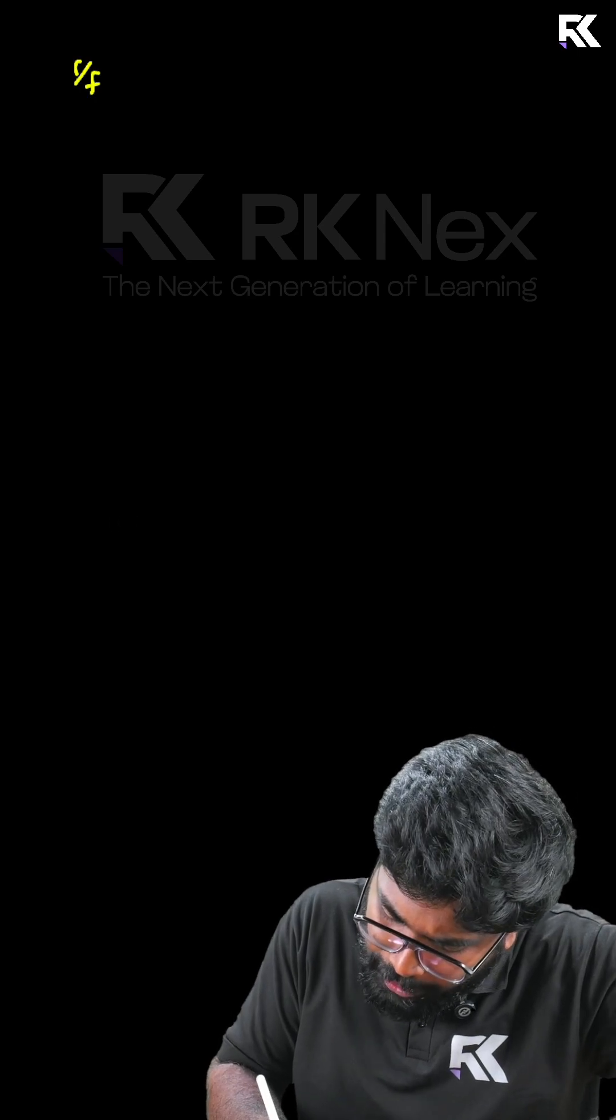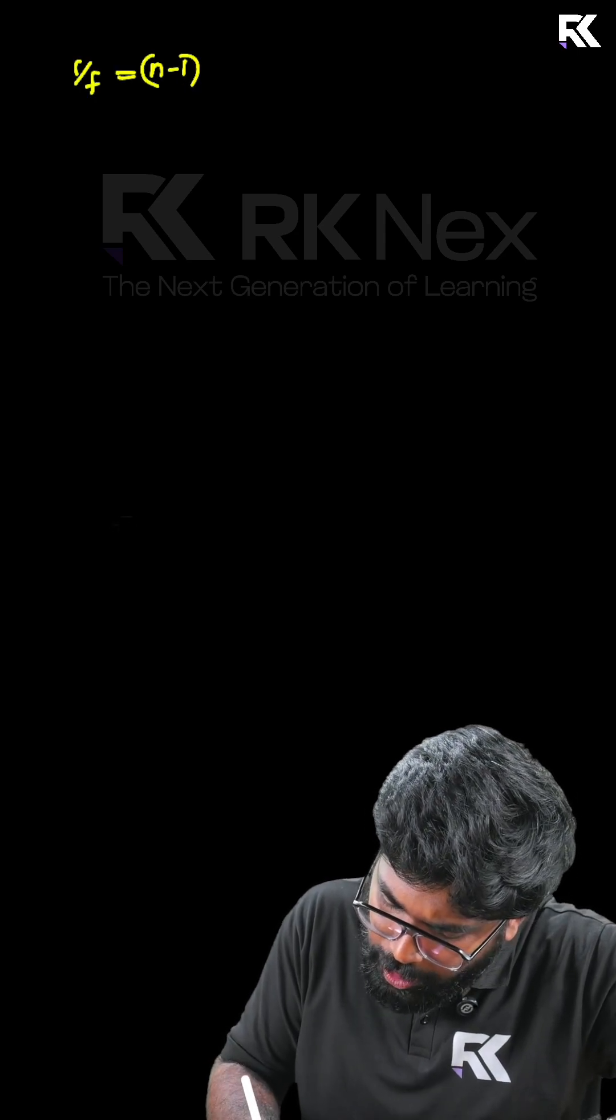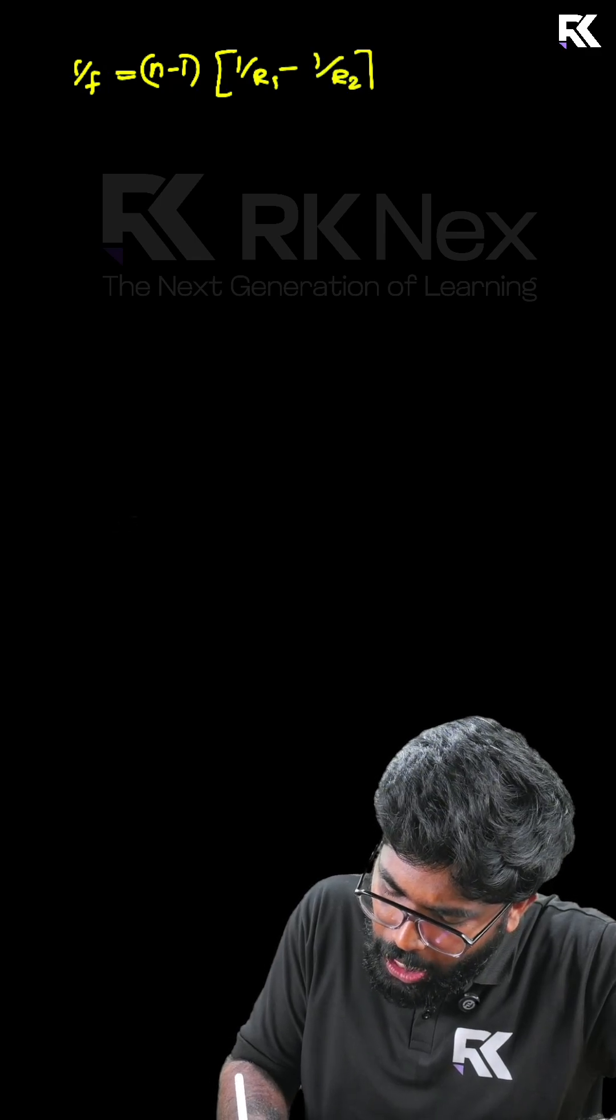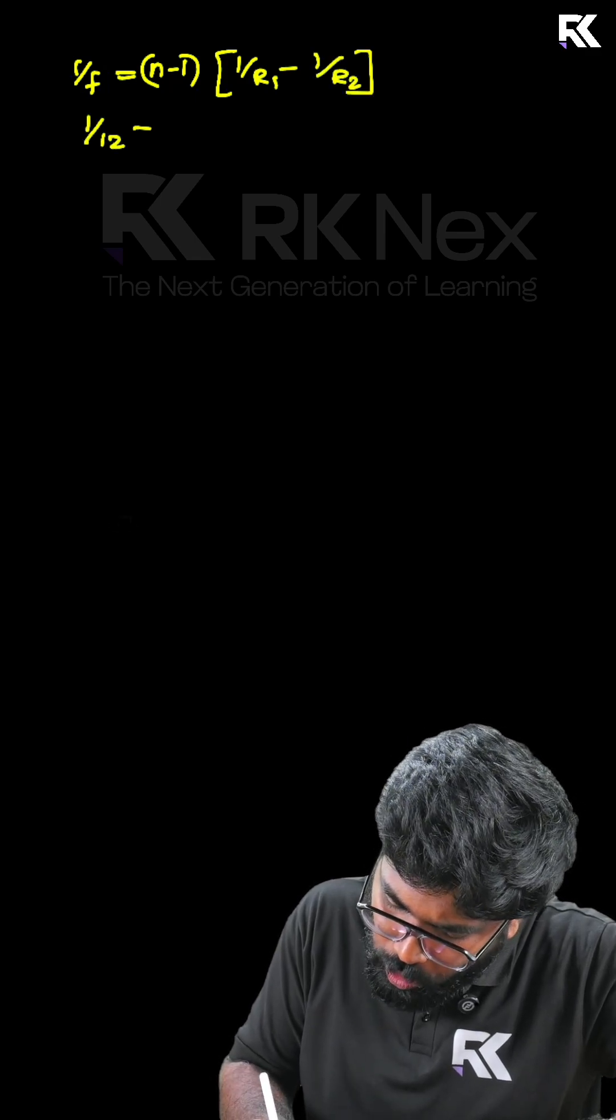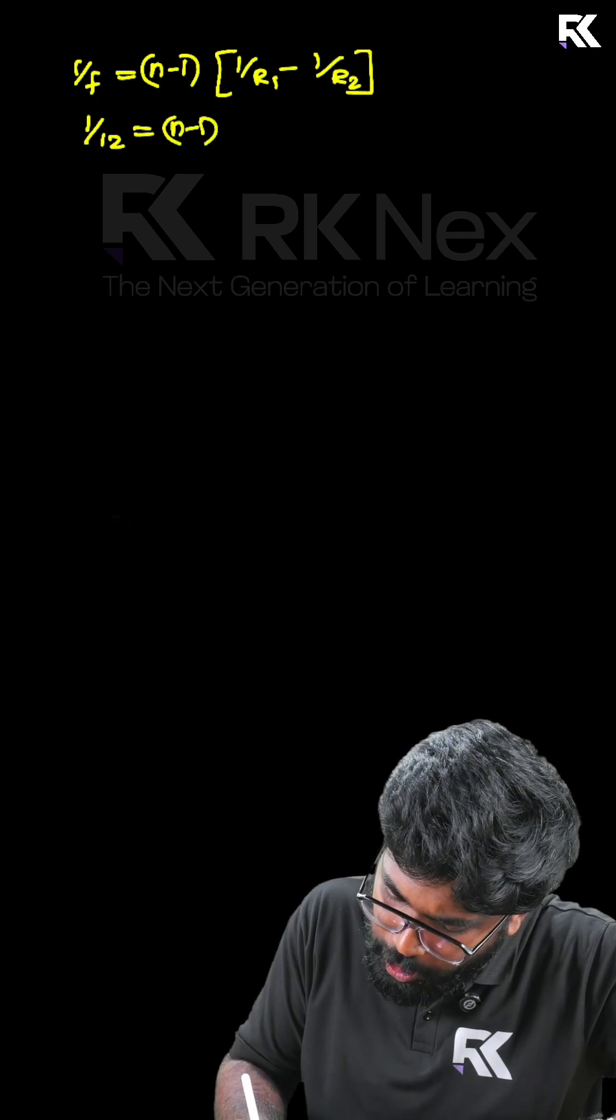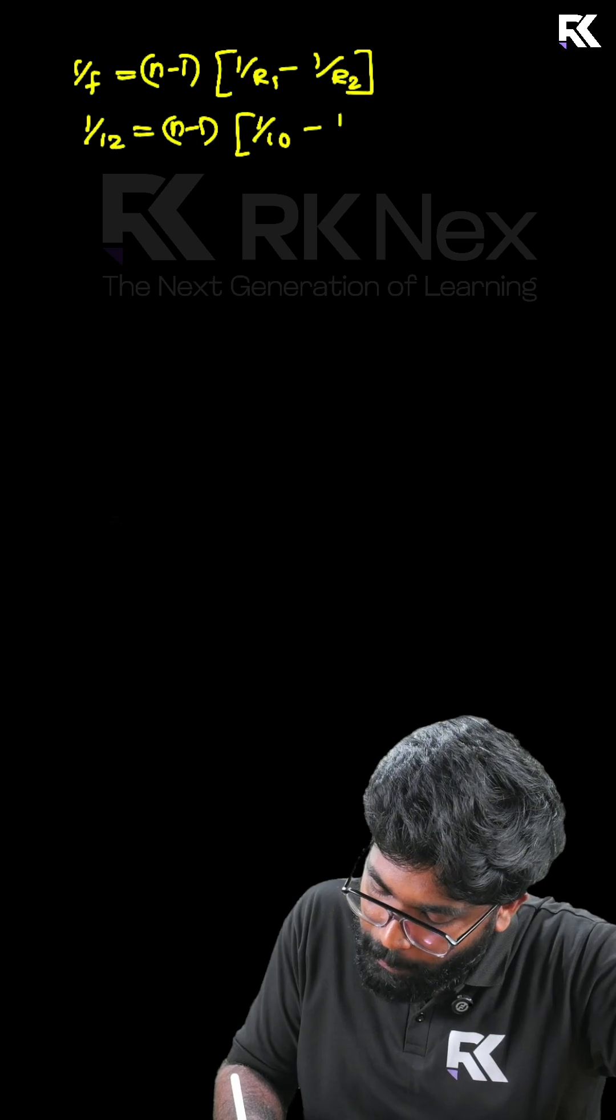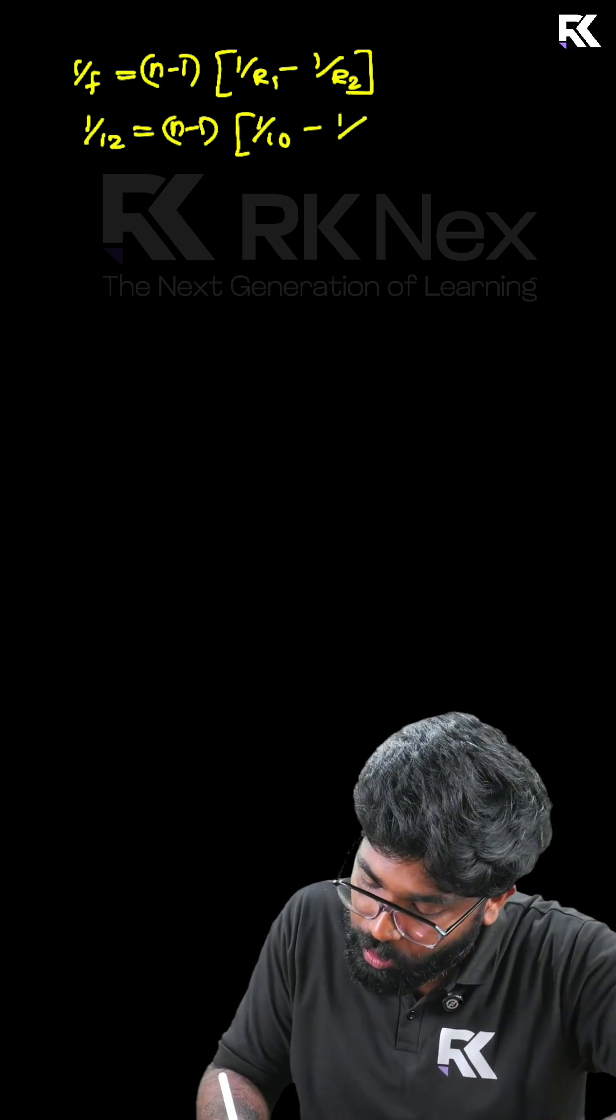1 by f is equal to n minus 1 into 1 divided by r1 minus 1 divided by r2. Substitute 1 by 12 is equal to n minus 1 into r1. R1 is positive 10, so 1 divided by 10 minus r2 is negative 1 minus 15.